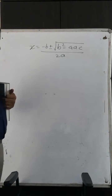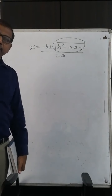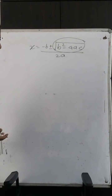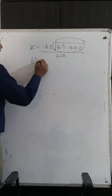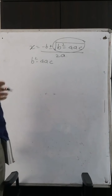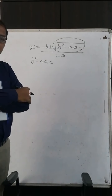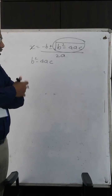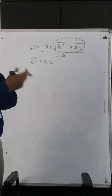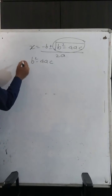This particular component of the formula decides the nature of the roots. And hence, this part of the formula is called the discriminant. That is, B squared minus 4AC decides the nature of the roots. We denote this particular expression, B squared minus 4AC, as delta.